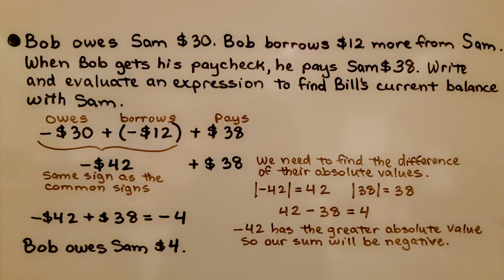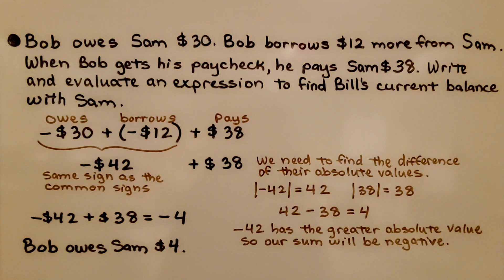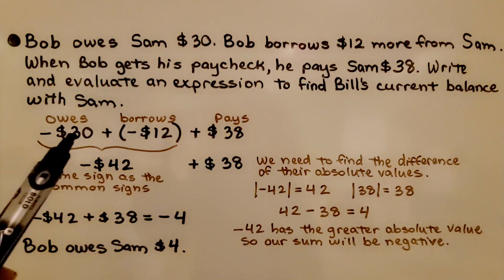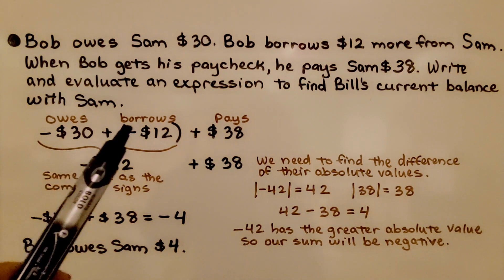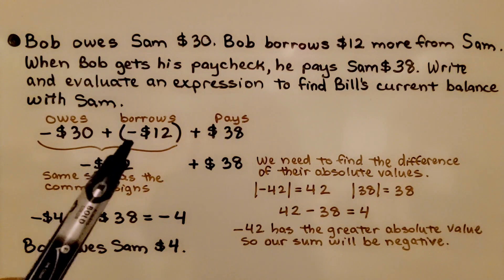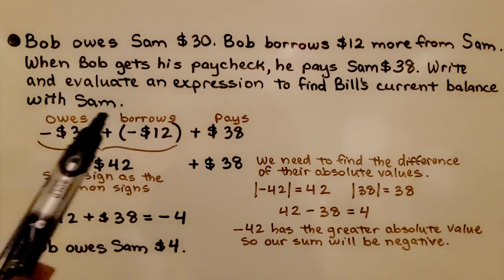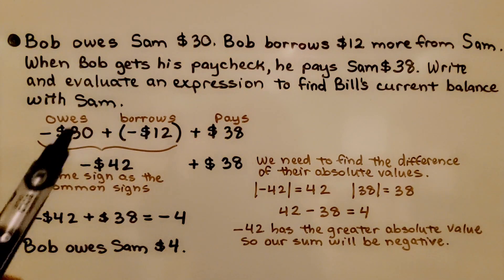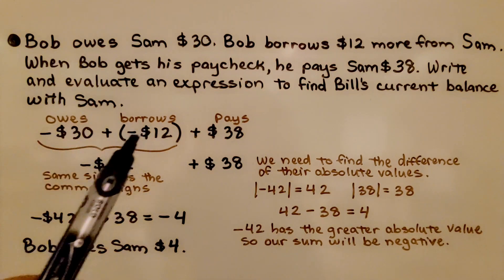Bob owes Sam $30, and Bob borrows $12 more from Sam. When Bob gets his paycheck, he pays Sam $38. Write and evaluate an expression to find Bob's current balance with Sam. We start off with Bob owing Sam $30, so that's negative 30. He borrows $12 more, so that's going to be negative 12. These are both a debt.